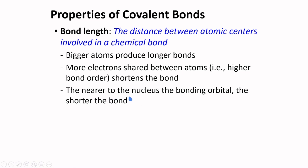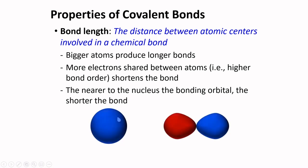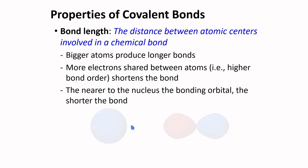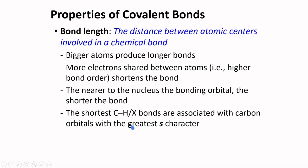The nearer to the nucleus, the bonding orbital, the shorter the bond. You should know that S orbitals are much closer to the nucleus compared to the P orbitals. So, if there are more S-character in your bond, the bond tends to be shorter.